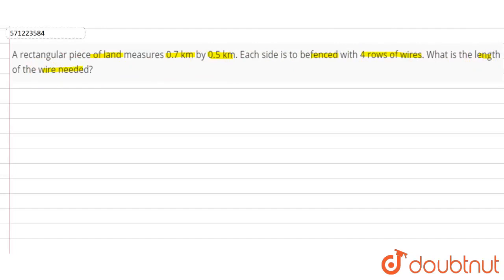So here a rectangular piece of land is given whose sides are 0.7 kilometer by 0.5 kilometer. That means length is 0.7 kilometers and breadth is 0.5 kilometers.